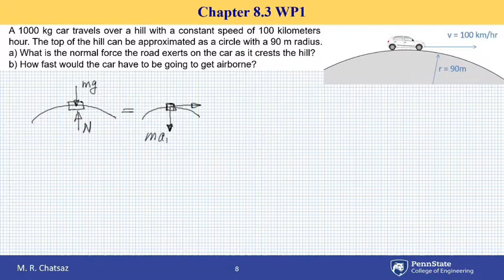So let this be ma_n and let this be ma_t. Since the car has a constant velocity tangent to the road, a_t or tangential acceleration is zero. That's why I'm not showing any force in t direction on the free body diagram or the mass acceleration diagram.